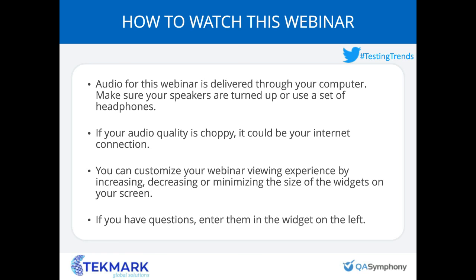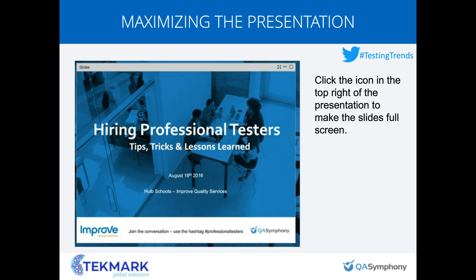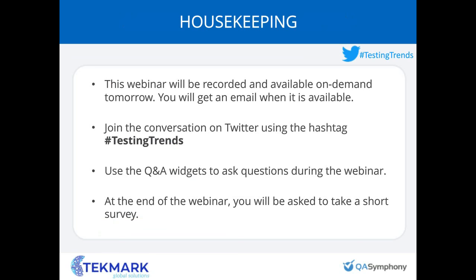You can customize your webinar viewing experience. Those widgets you see on screen can be increased or decreased in size. You'll notice the Q&A widget on the left — if you have any questions, technical or for the speaker, just put them in that widget and someone will get back to you. If you want to see the presentation full screen, click the little icon in the upper right. Press escape to exit. The webinar will be recorded and available on demand after it ends, and you'll get an email with a link.